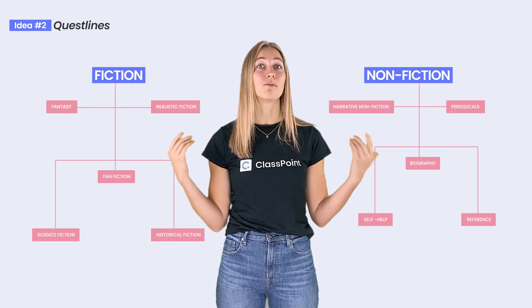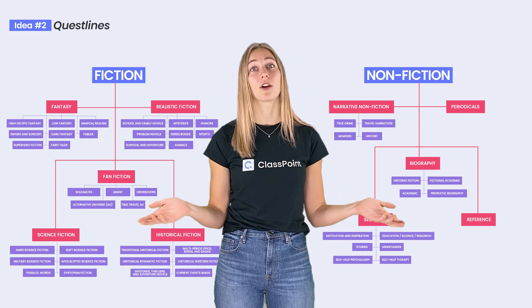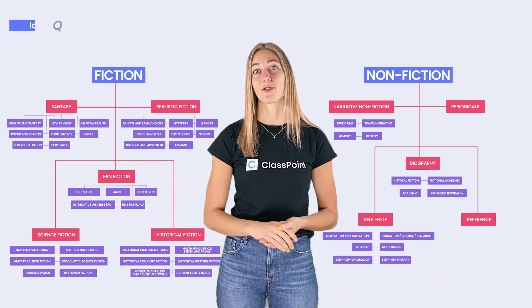Idea number two is quest lines. Similar to a role-playing game which allows gamers to choose their path and has different outcomes based on their choice, we can also give this opportunity to students. For example, they can choose their own adventure for a book report — you can give them the option to choose fiction or non-fiction, then broken down into genre and sub-genre after that for them to choose.